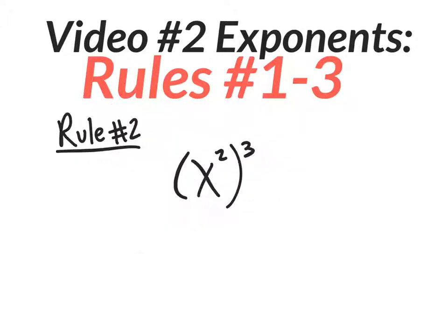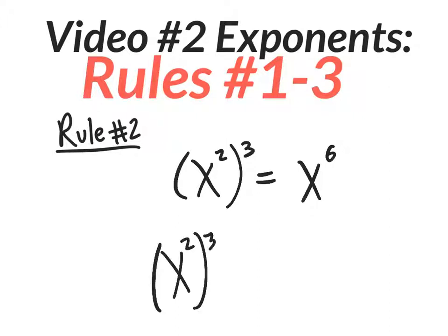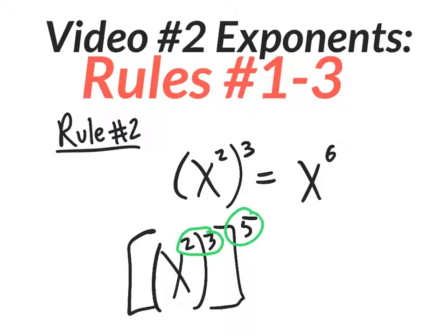Let's move on to rule two. Rule two was when you had a power to a power, you multiply — so x to the sixth is your answer. You could also have a power to a power to a power, like x to the second, to the third, then to the fifth. Two times three is six, and six times five is thirty, so your answer is x to the thirtieth. Rule two is pretty straightforward.